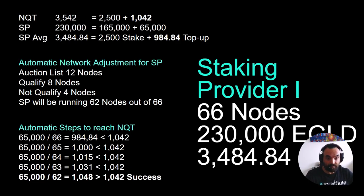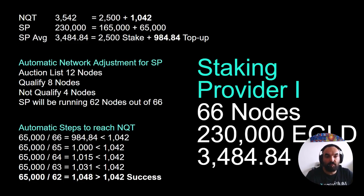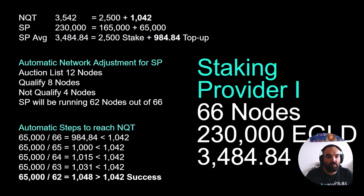The network parameters for this example have the NQT set at 3,542, which means 1,042 EGLD top-up is needed per validator node. From our previous calculations, we observe that staking provider 1 is missing 57.16 top-up per node. This means that if they have any nodes in the auction list, they will not qualify. Let's continue the scenario.